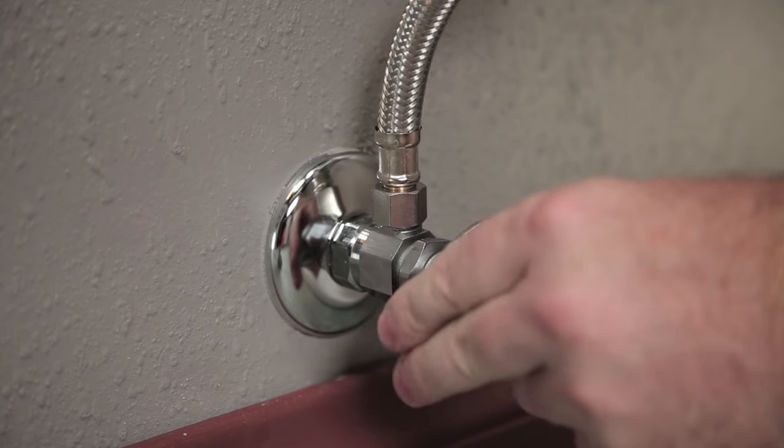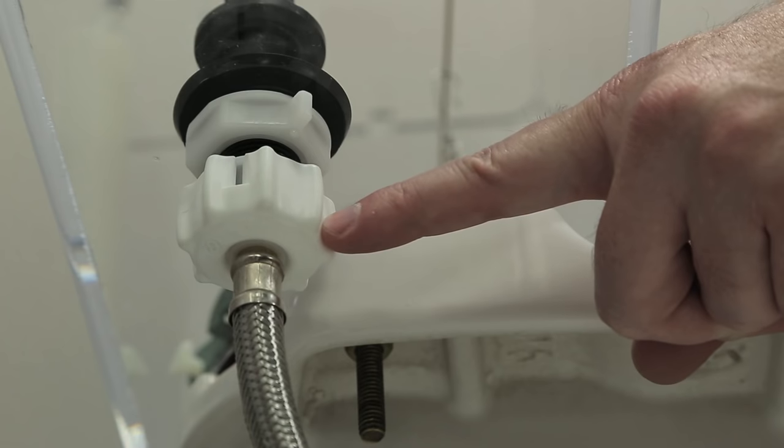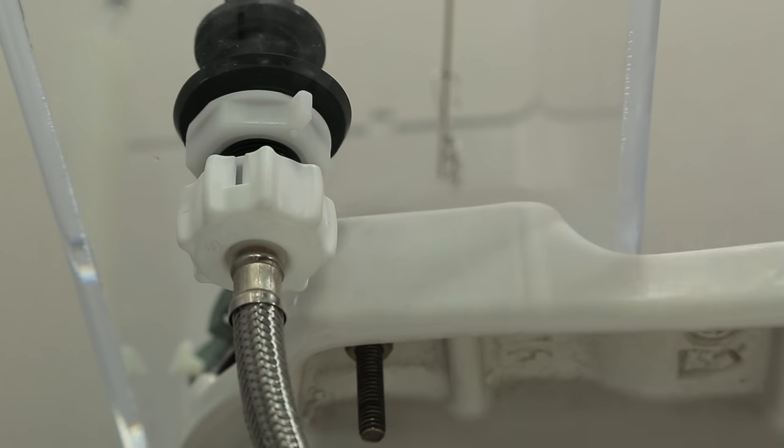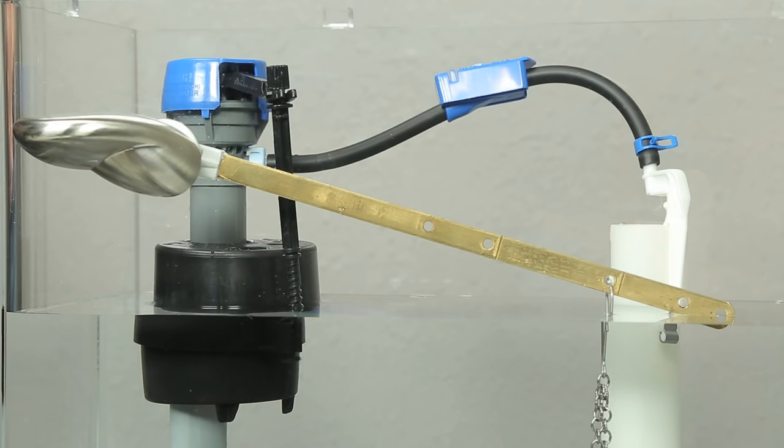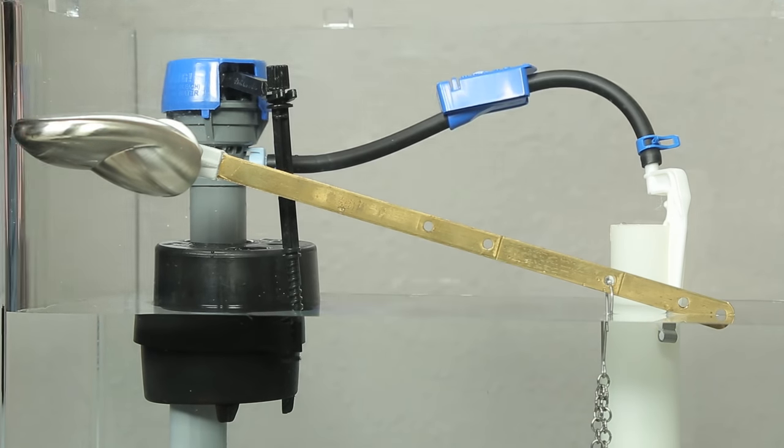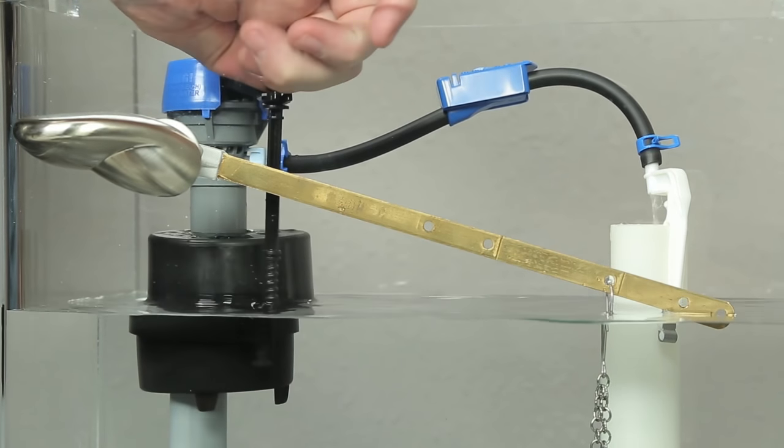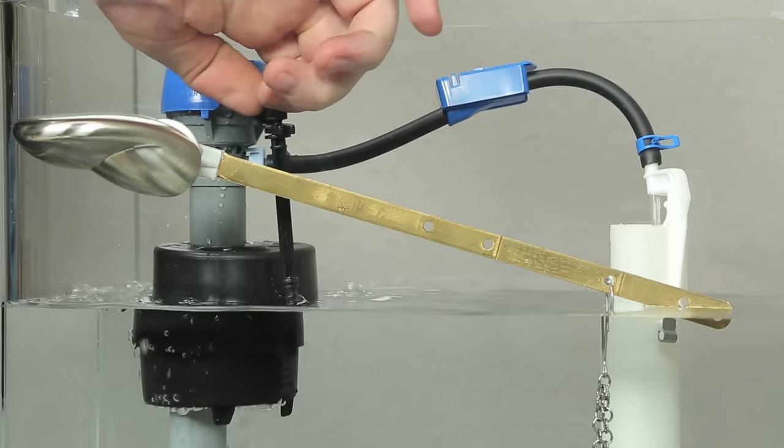Now turn the water supply on and let the tank refill. Check for leaks at the connector nut and lock nut. If a leak occurs, tighten the nuts further until the leak stops. Set the water level one half inch below the top of the overflow pipe. Turn the adjustment rod at the side of the fill valve clockwise to raise the water level and counterclockwise to lower the water level.